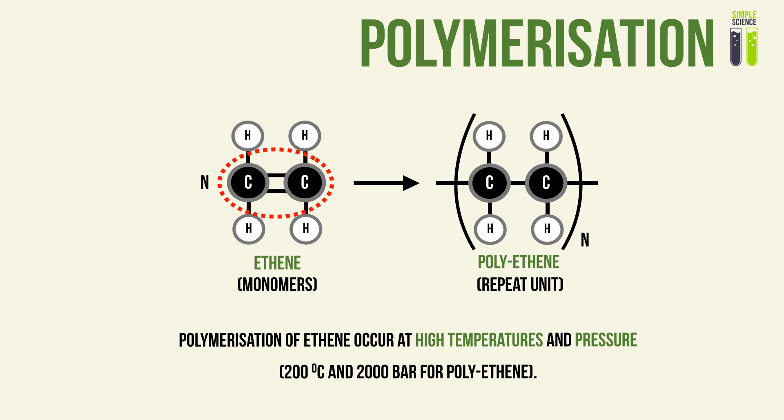You must memorize the reaction conditions for polymerization. Typically, polymerization takes place at high temperature and pressure — for polyethene, that is 200 degrees Celsius and 2000 bar. You expose the alkene to very high temperature and very high pressure for the ethene monomers to break their carbon double bonds and join together to form repeating units as part of a very long polymer.